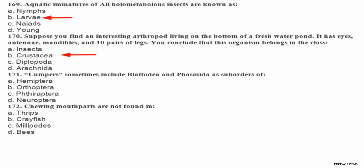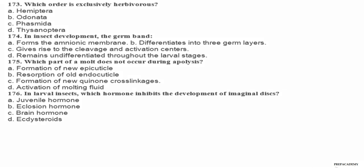Question 171. Lumpers sometimes include Blattodea and Phasmida as suborders of: A Hemiptera, B Orthoptera, C Phthiraptera, D Neuroptera. Question 172. Chewing mouth parts are not found in: A thrips, B crayfish, C millipedes, D bees. Question 173. Which order is exclusively herbivorous? A Hemiptera, B Odonata, C Phasmida, D Thysanoptera.